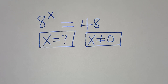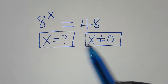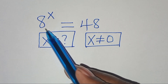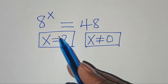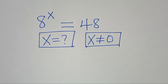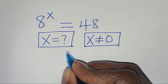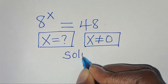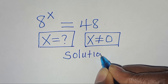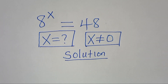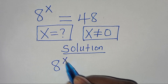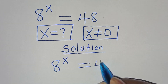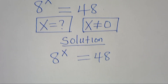Hello everyone, you're welcome to solve this nice exponential question: 8 to the power of x is equal to 48. What is the value of x, given that x is not equal to 0? Let's present the solution from here.